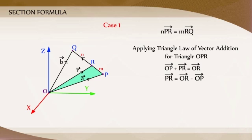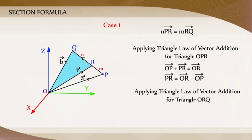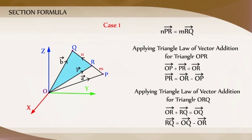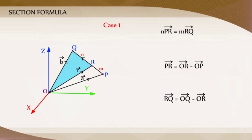Again, from triangle ORQ, we get OR vector plus RQ vector is equal to OQ vector. That is, RQ vector is equal to OQ vector minus OR vector.